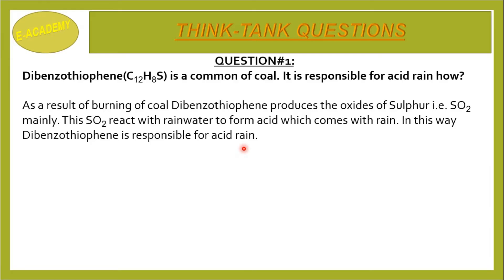When we burn coal, Di-Benzothiophen produces oxides of sulfur. This SO2 reacts with rain water. In this way, Di-Benzothiophen is responsible for acid rain.